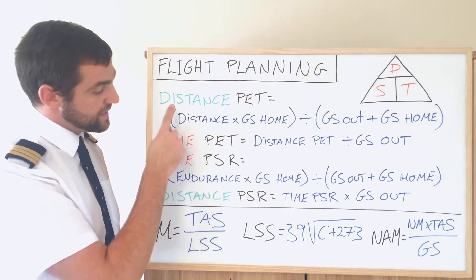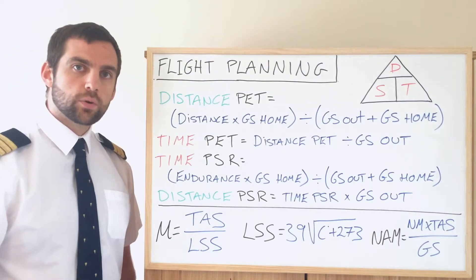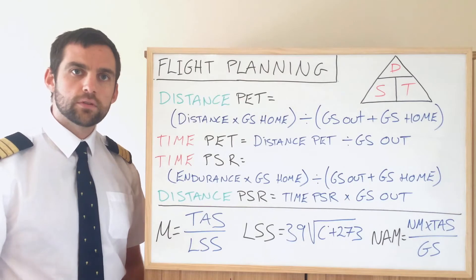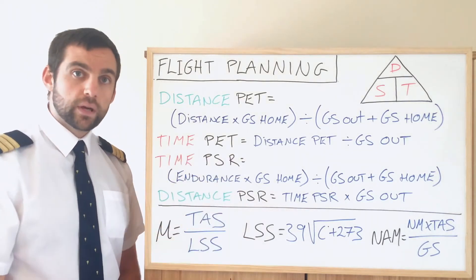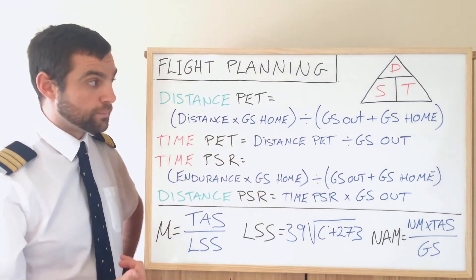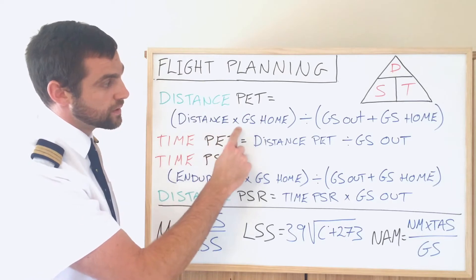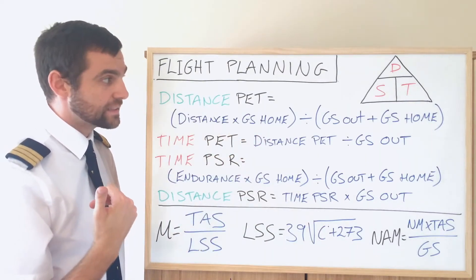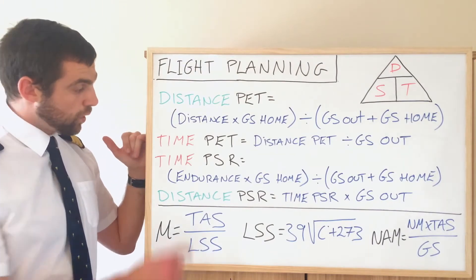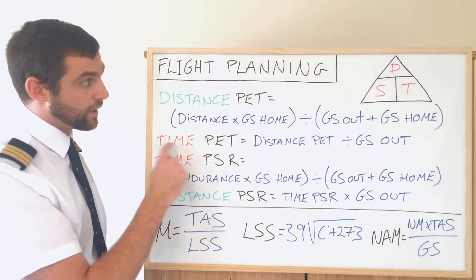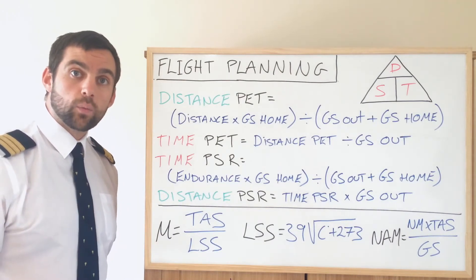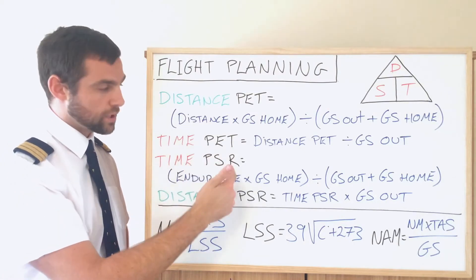As you can see, there are distance and time equations for both the point of equal time and the point of safe return. Before we talk about the formulas themselves, you need to know that in all these formulas — especially in the ATPL exams — you'll need to calculate with a CR3 or CRP5 the headwind and tailwind components. You'll be given a heading, a wind vector, a wind strength, calculate the headwind and tailwind, and then you can work out your ground speed outbound and your ground speed home.